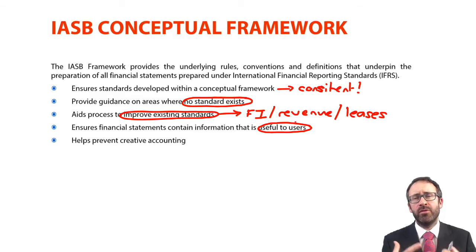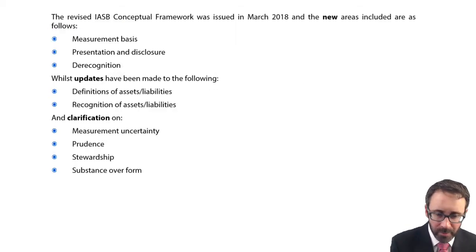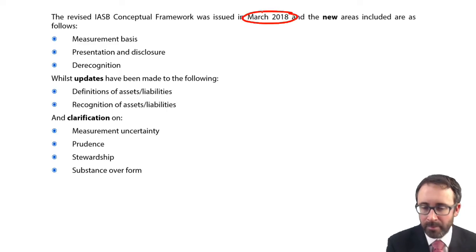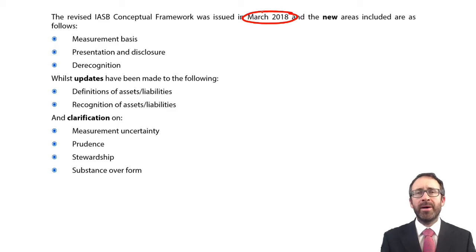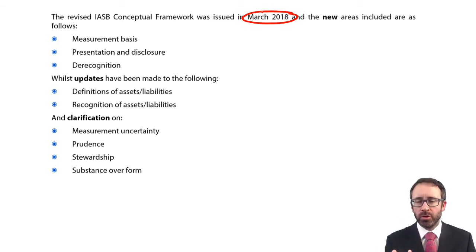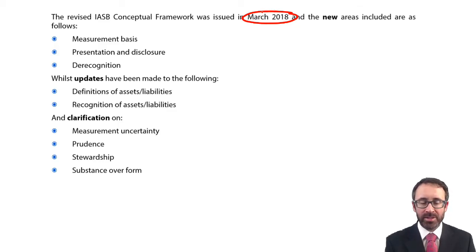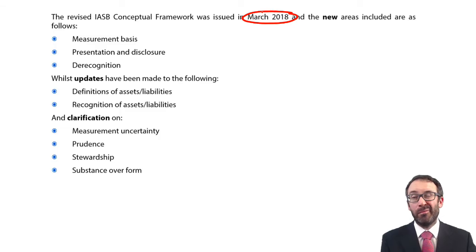If you've got this Rosetta Stone — this fundamental guidance — then we can ensure there is no creative accounting. Some of you may have seen the framework previously in financial accounting. If so, just be aware we are now looking at the revised framework issued in March 2018. Don't panic — there are no massive changes, just some subtle ones. There are some new areas that have been updated and added to what was already there, some specific updates to particular areas, and some clarity added on areas that were previously removed and have now been added back in.